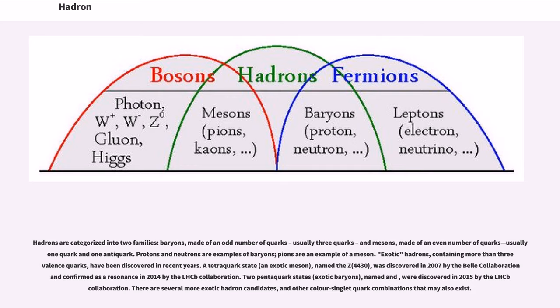Exotic hadrons containing more than three valence quarks have been discovered in recent years. A tetraquark state (an exotic meson named Z(4430)) was discovered in 2007 by the Belle Collaboration and confirmed in 2014 by the LHCb Collaboration. Two pentaquark states (exotic baryons) were discovered in 2015 by LHCb. Several more exotic hadron candidates and other color singlet quark combinations may also exist.